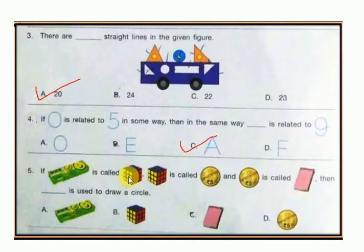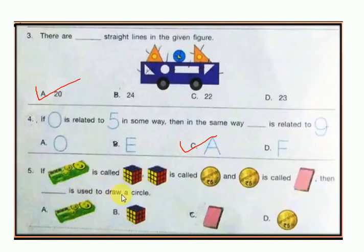Question number 5: if this box is called a coin, and this coin is called a notebook, then what is used to draw a circle? So definitely, to draw a circle you would use a coin.